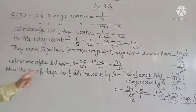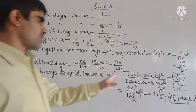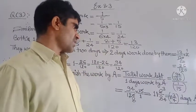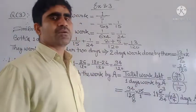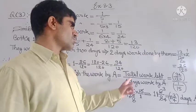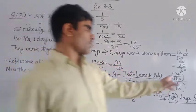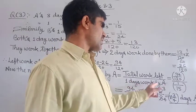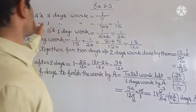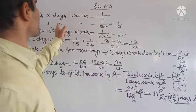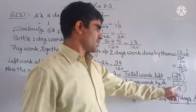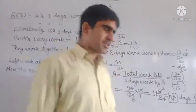So now the number of days to finish the work by A: total work left upon one day's work by A. So total work left is 94 upon 120. Now one day's work by A is 1 upon 15.